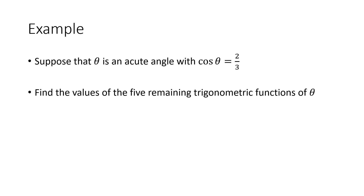So let's look at an example of how we can use these identities to figure out the six values of the trigonometric functions if we know one. If I'm given that cosine of theta is two thirds, what are the five remaining trigonometric functions? One of the easiest ones to figure out from knowing cosine is secant, because the reciprocal identity says that secant theta is one over cosine theta. We know cosine theta is two thirds, so secant theta is the reciprocal of two thirds, which would be three halves.